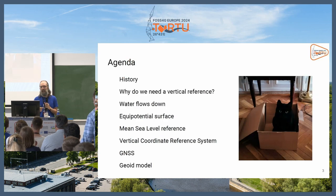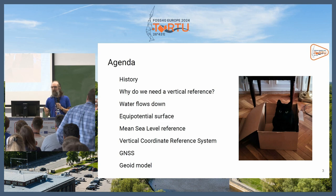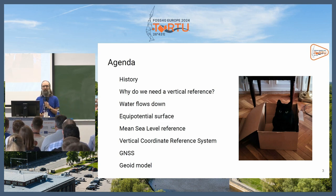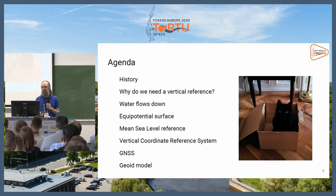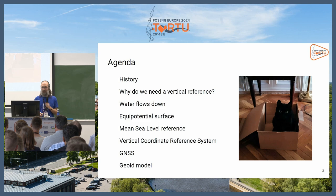So what are we going to see today: first, a bit of history to get some context, then I will try to answer why we need a vertical reference. We'll see why water flows down, the equipotential surface — that's an important concept — what mean sea level is and why we take it as a reference, what a vertical coordinate reference system is, and we'll talk about GNSS and geoid models.